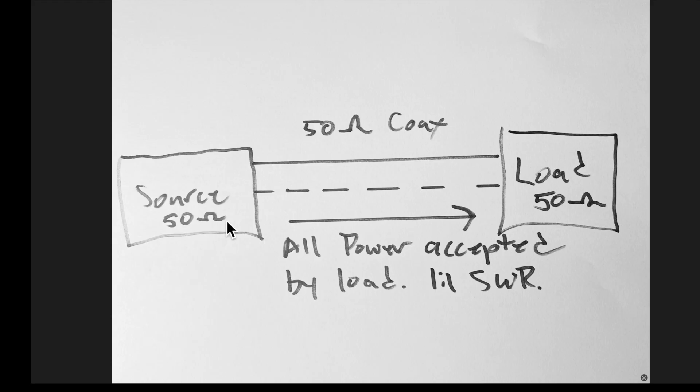Let's cover some transmission line basics, because if we don't understand those, we'll have difficulty understanding reflected power. First, let's review what happens when everything matches and we have a no-loss transmission line. Here we have a transmitter with a 50-ohm output impedance, a 50-ohm coax transmission line, and a 50-ohm load like an antenna. In this situation, all power sent from the source will be dissipated in the load. There is no reflected power. The SWR is 1-to-1 and there are no standing waves.